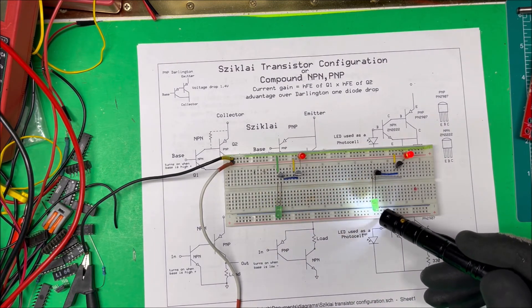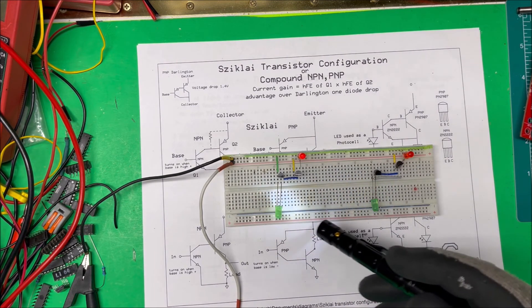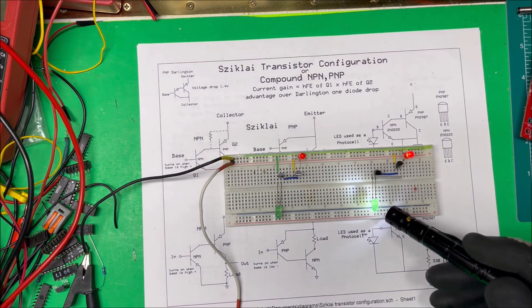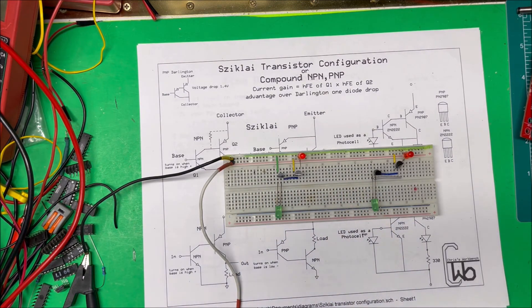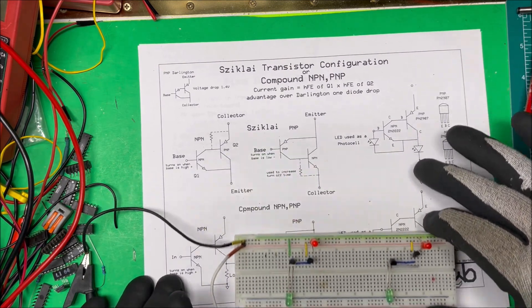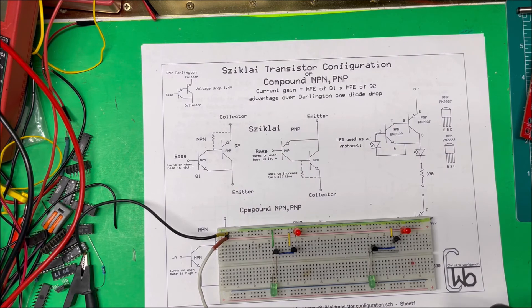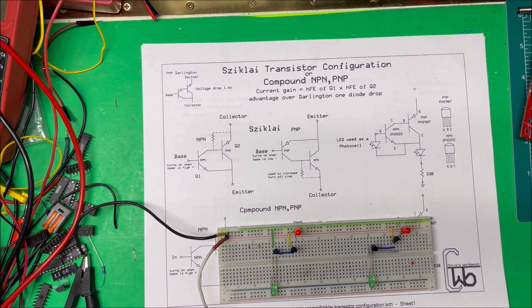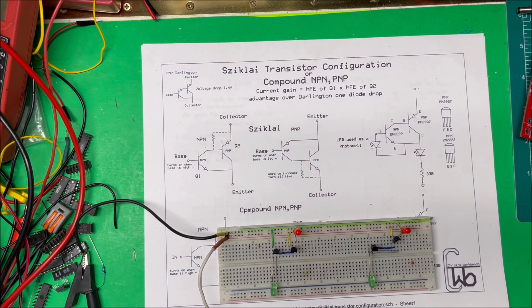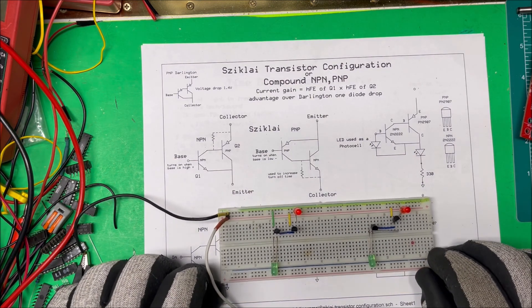Just using these as a photocell here, so very little current and huge amount of gain on there and one diode drop, so they work out good. Good little circuit. That's the Sziklai transistor configuration or compound NPN-PNP. I hope I'm saying the Sziklai the right way, but anyway that's how it works. Thank you.